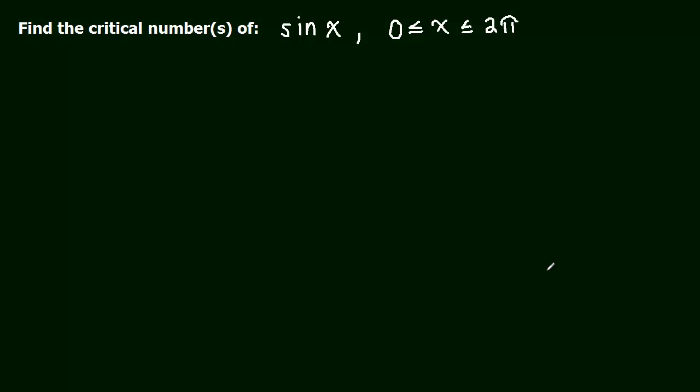Let's find the critical numbers of sine x when x is between 0 and 2π. And why might we want to force x to be between 0 and 2π? We know that minimums and maximums only happen at critical numbers, and the sine function goes on forever and is just a wave, so it's got a ton of minimums and maximums.